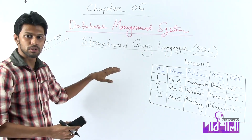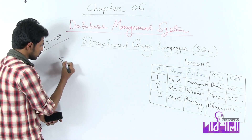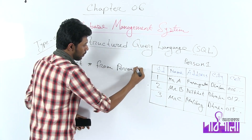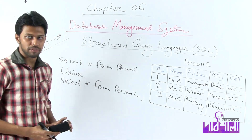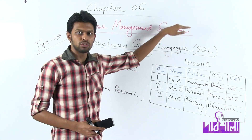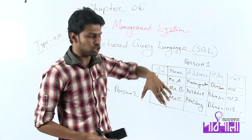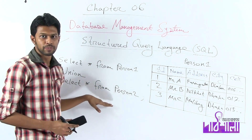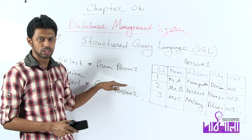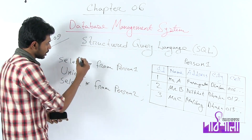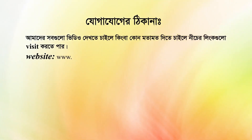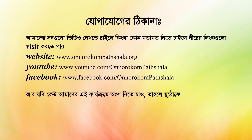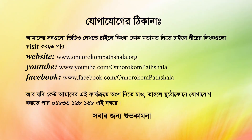We will learn union, intersection, and minus using SQL statements. These are two tables: person1 table and person2 table. If you are using UNION, write: SELECT * FROM person1 UNION SELECT * FROM person2. This is the statement. You will see the combined results from person1 table and person2 table.